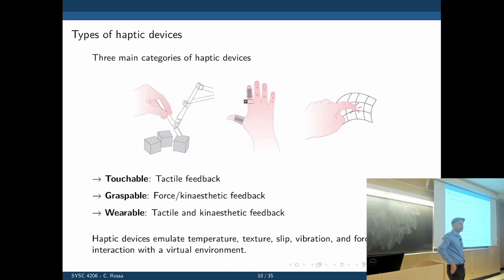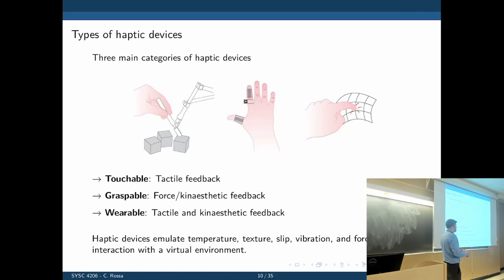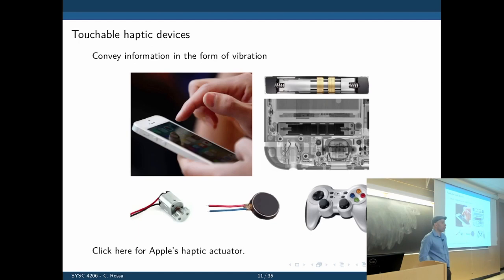These devices can emulate temperature, texture, vibration, and force during interaction with a virtual environment or during interaction with a tele-operated or remotely controlled environment. The robot could be in Europe while you control it from here, provided that the communication delay is small enough.